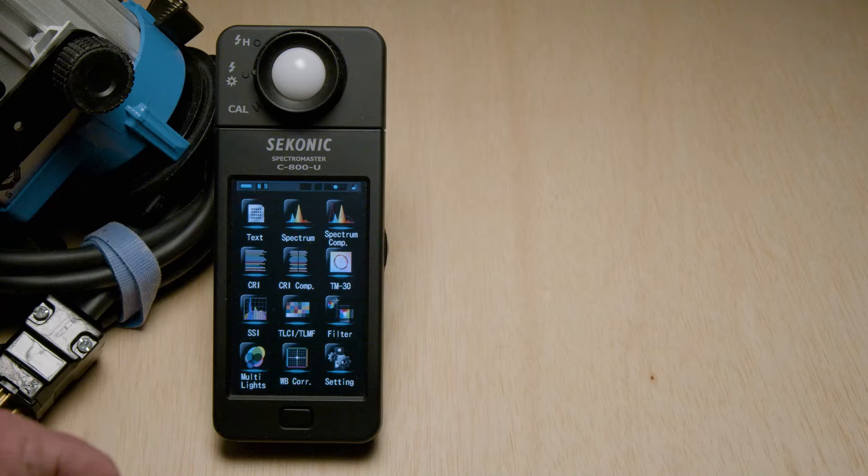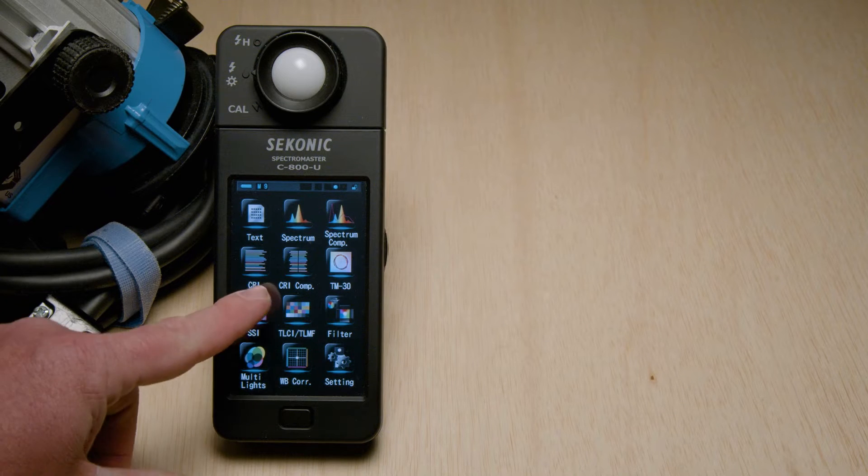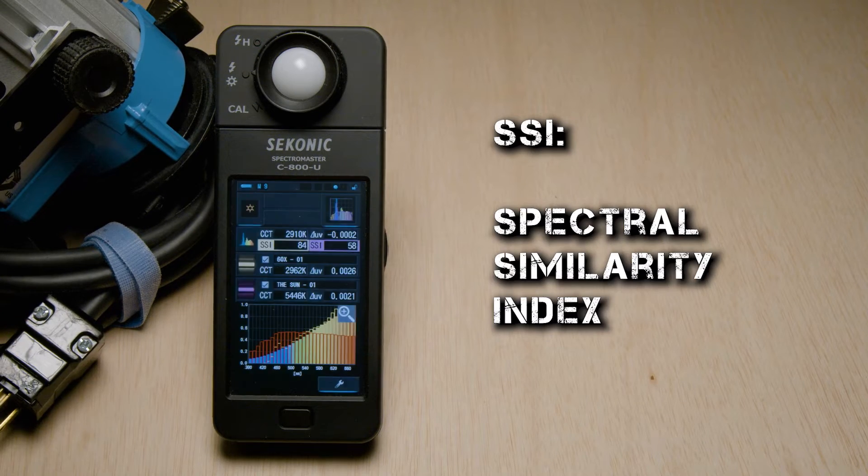Moving on to a great tool that most have seen, called SSI or Spectral Similarity Index. This is a really great mode for helping you find lights that you personally like. We're not talking about the naked eye, we're not talking about the three-chip broadcast cameras, we're not talking about TM30-18 — this is just personally what you like.